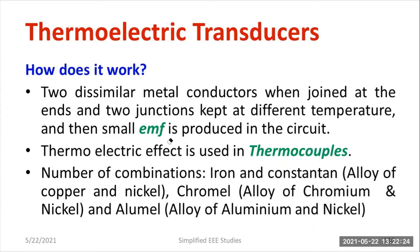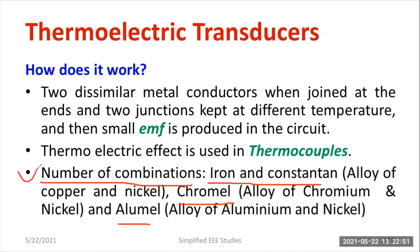The thermoelectric effect is used in thermocouples. There are different combinations: iron and constantan — where constantan is an alloy of copper and nickel. Next is chromel, which is an alloy of chromium and nickel; then alumel, which is an alloy of aluminum and nickel. These specific combinations are required — using different combinations would not produce a functioning thermocouple, so the thermocouple combination is mandatory for thermoelectric transducers.